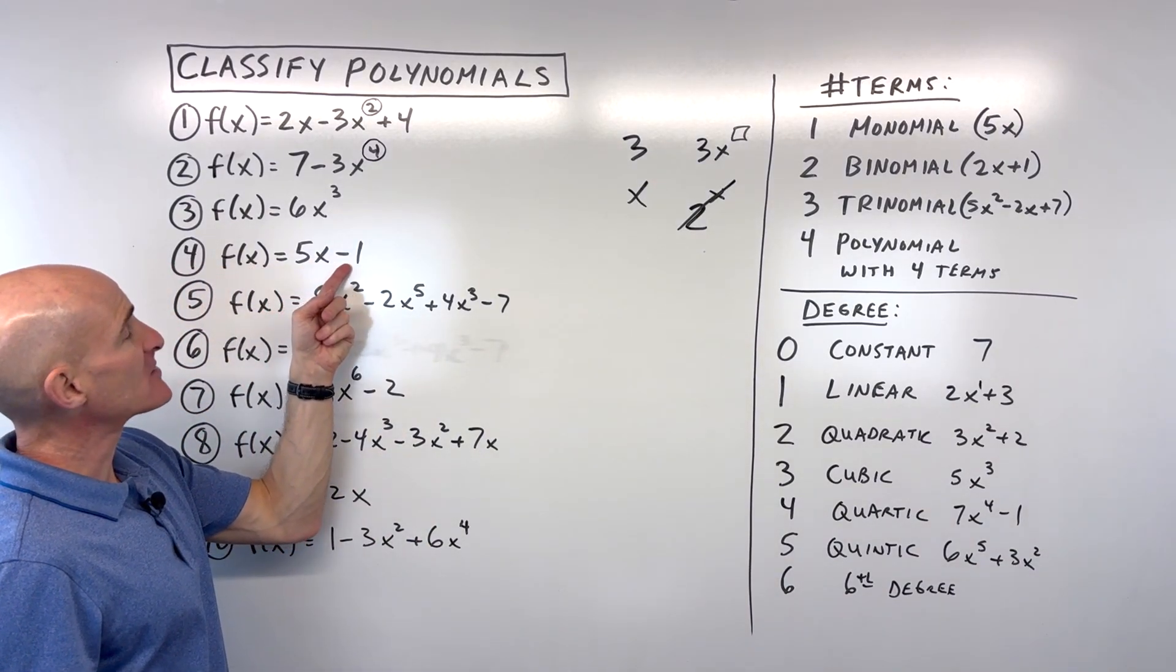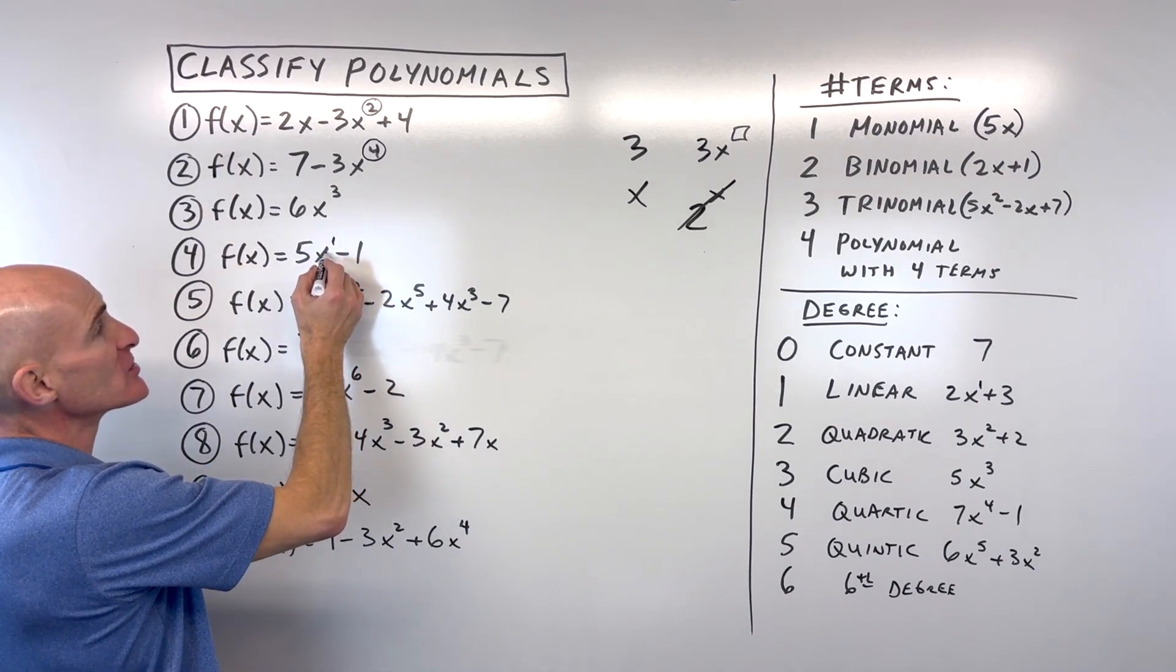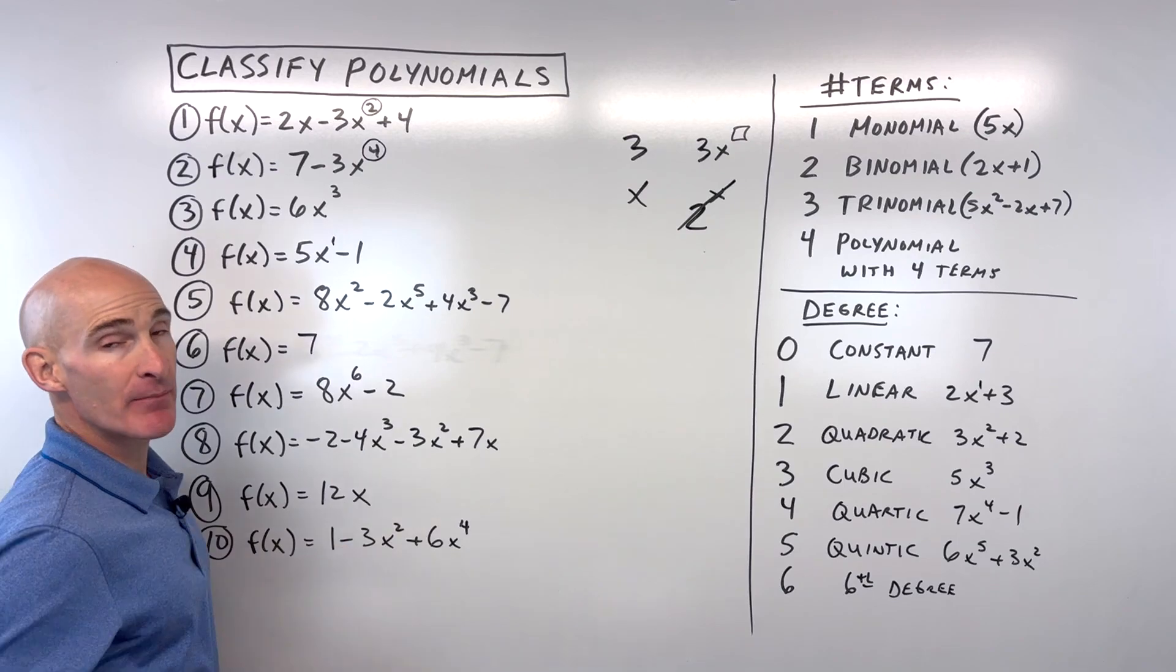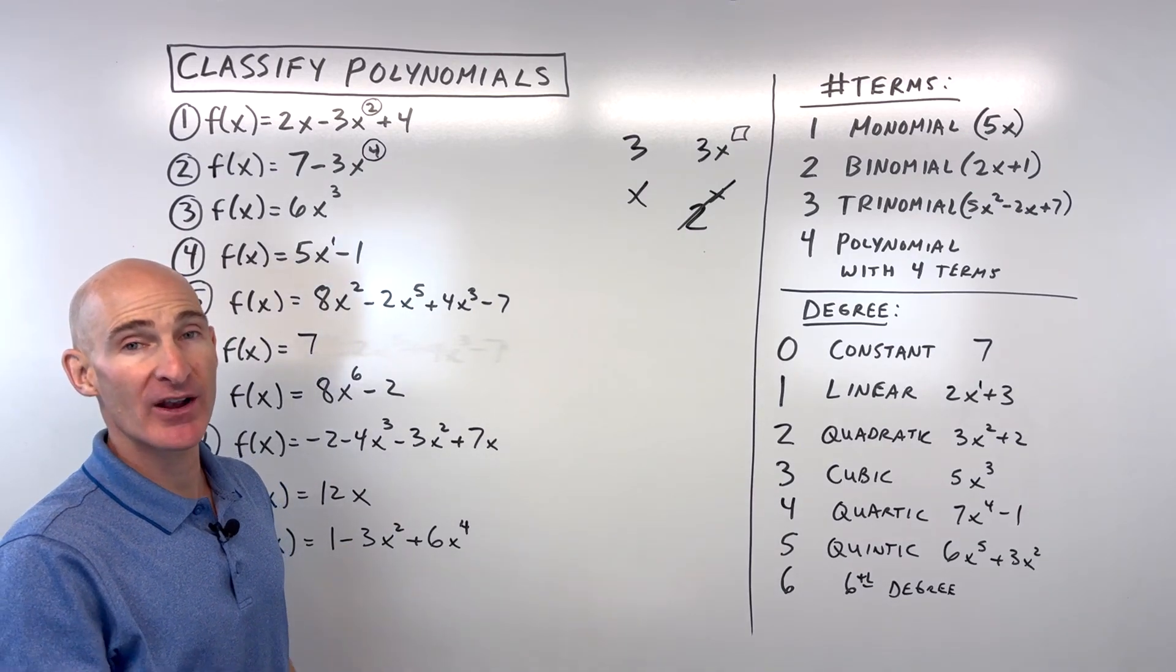For number four, 5x - 1. Highest degree is 1, so we're thinking linear like a line. Two terms, that's a binomial. So I would say a linear binomial.